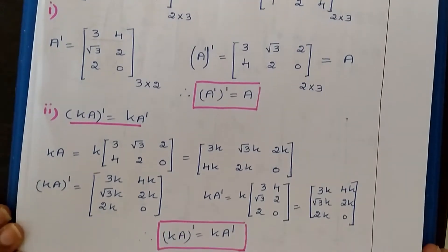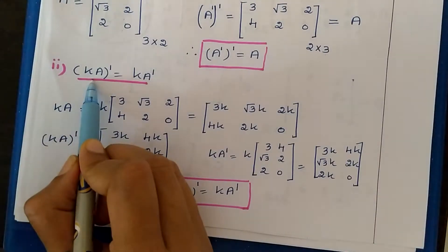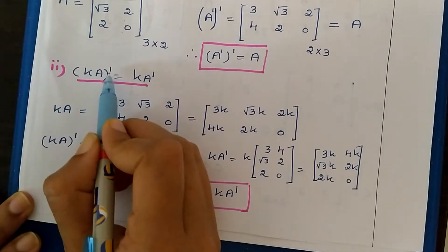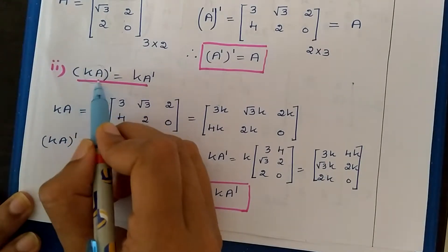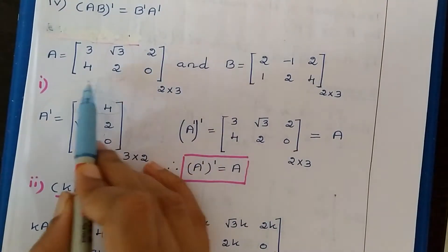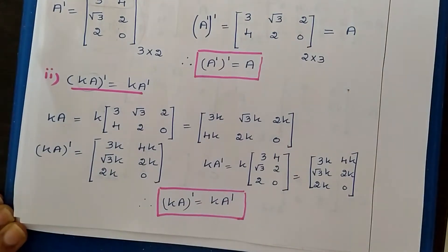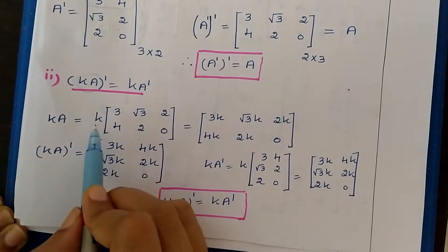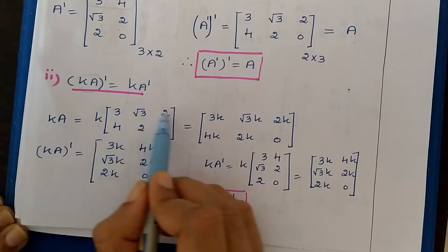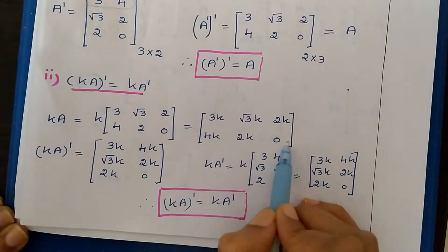Next is the second property: (kA) transpose equals k times A transpose, where k is a scalar constant. First let us find kA. Matrix A has elements 3, √3, 2, 4, 2, 0. When we multiply a scalar k with a matrix, we multiply k with every element. So kA gives us 3k, √3k, 2k, 4k, 2k, 0.